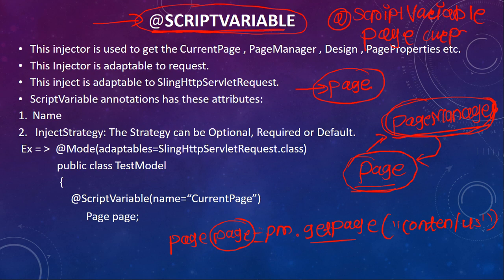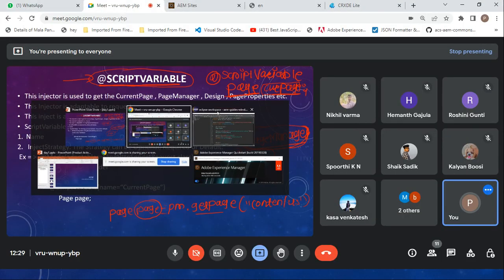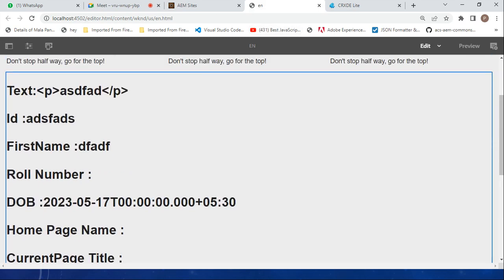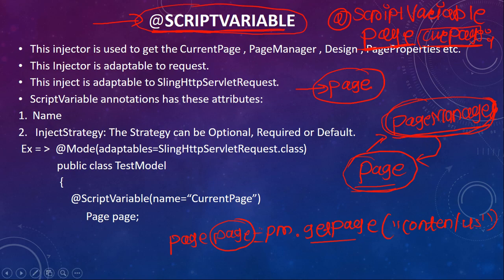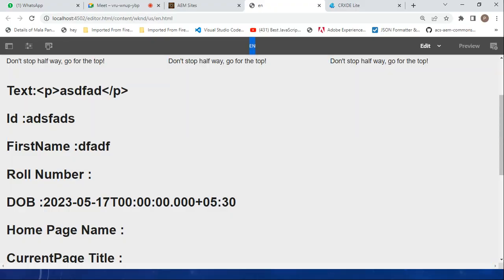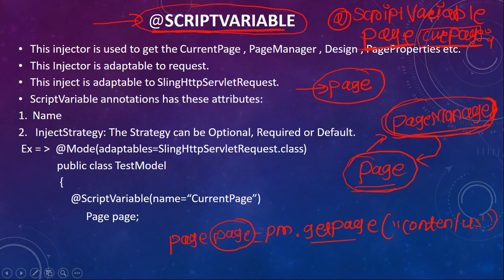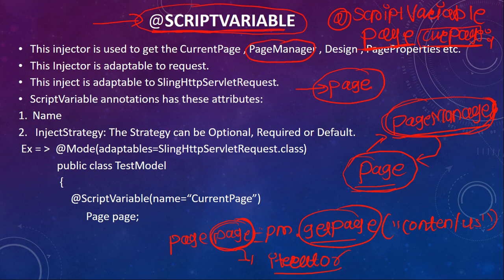You define a field like '@ScriptVariable Page currentPage'. This script variable automatically takes the current page — the page where your component is inserted, for example the 'en' page — and all information from that page gets injected into your PageManager. Using that PageManager you can get pages, store them, and iterate through them.